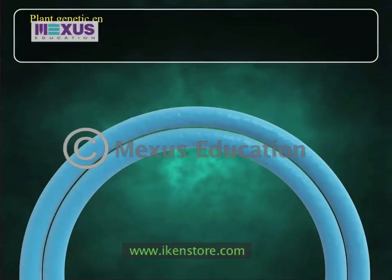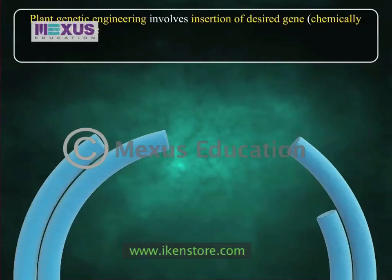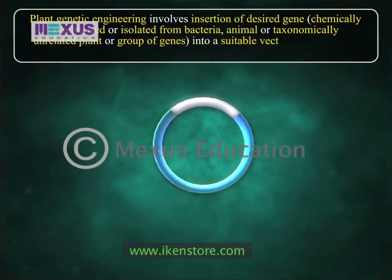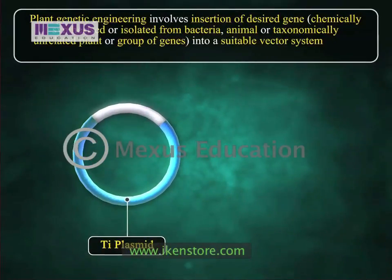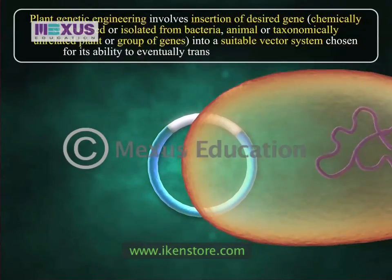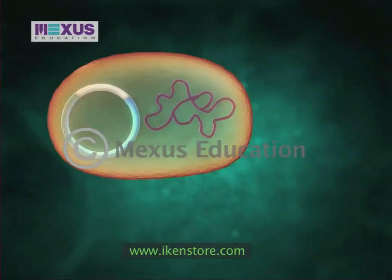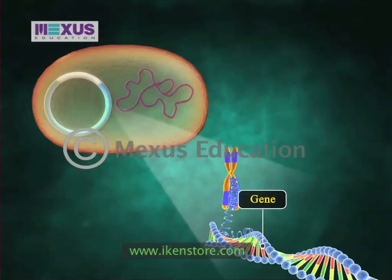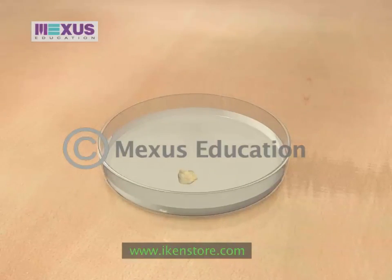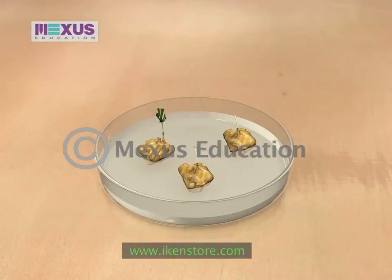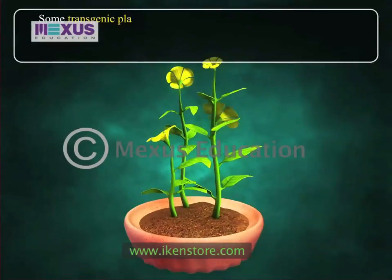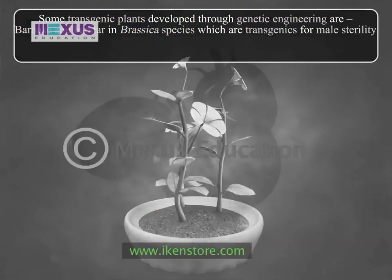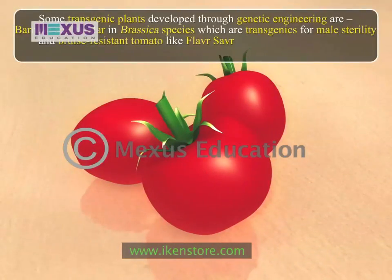Plant genetic engineering involves insertion of the desired gene — chemically synthesized or isolated from bacteria, animal, or taxonomically unrelated plant — or group of genes into a suitable vector system such as Ti plasmid or Agrobacterium tumefaciens, chosen for its ability to eventually transfer the DNA to plant cells. The desired DNA can thus be introduced into single cells of the plant. These cells containing the new gene in one of their chromosomes multiply and are persuaded to regenerate a plant in which each cell of every tissue contains the new gene. Some transgenic plants developed through genetic engineering are Barnase and Barstar in Brassica species, which are transgenics for male sterility, and bruise-resistant tomato like Flavr Savr, which are transgenics for food processing.